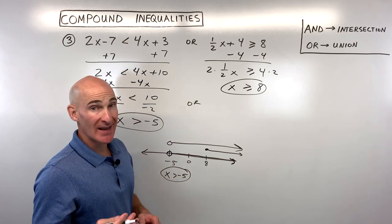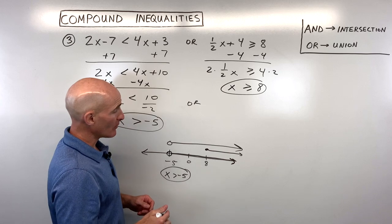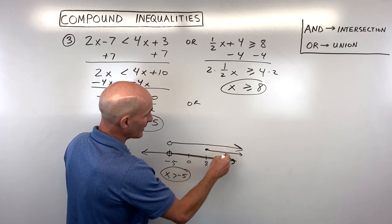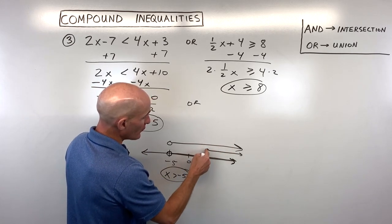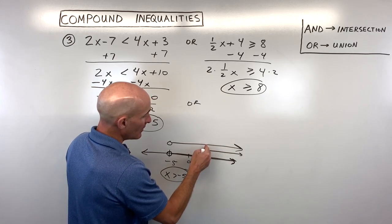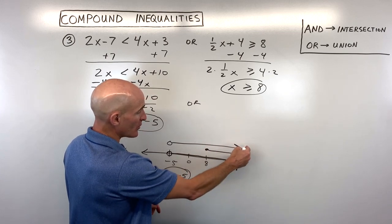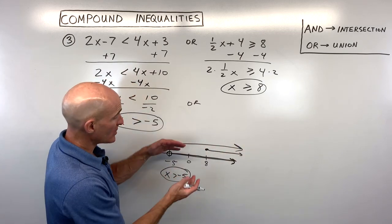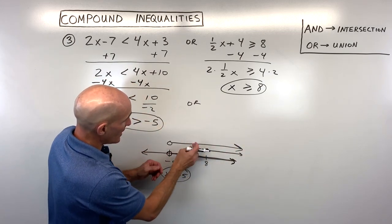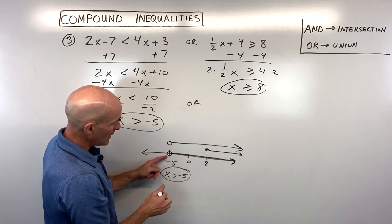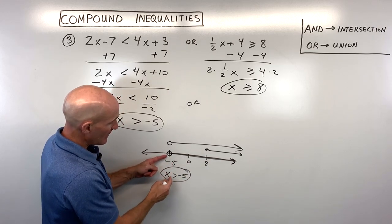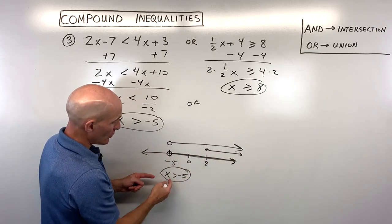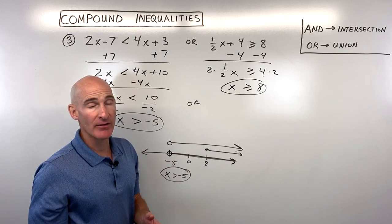If this were an 'and' problem, 'and' means intersection — we'd look for the overlap, which would only be from 8 to the right, giving x is greater than or equal to 8. But with 'or' we're talking about union, so we combine the sets, and the answer is x is greater than negative 5.